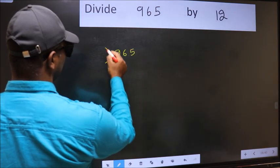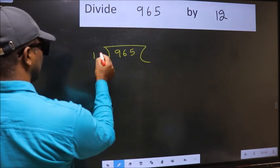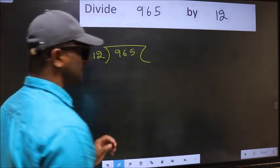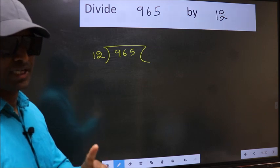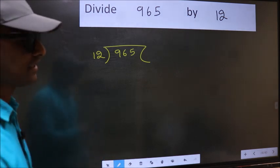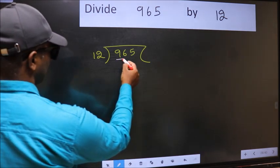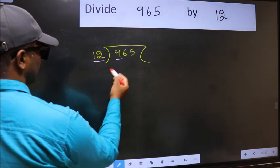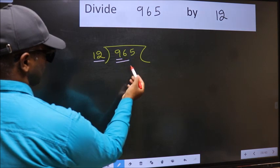965 and 12 here. This is your step 1. Next, here we have 9 and here 12. 9 is smaller than 12, so we should take two numbers: 96.